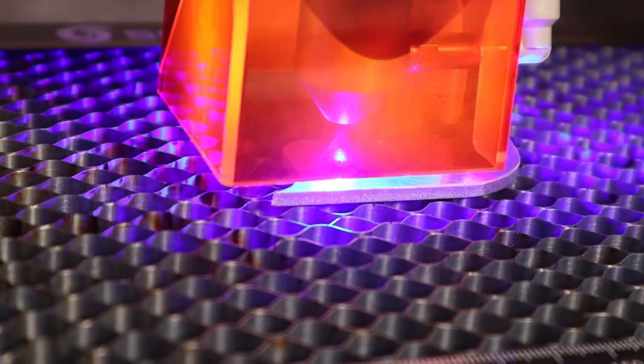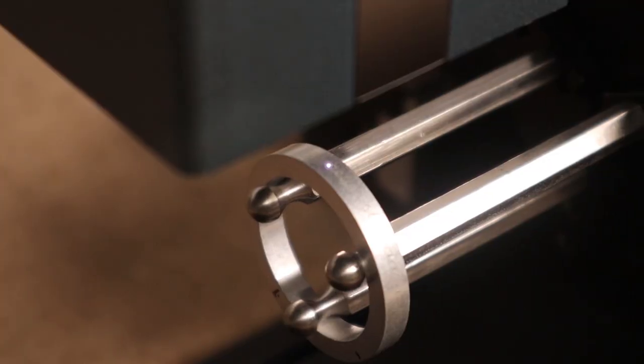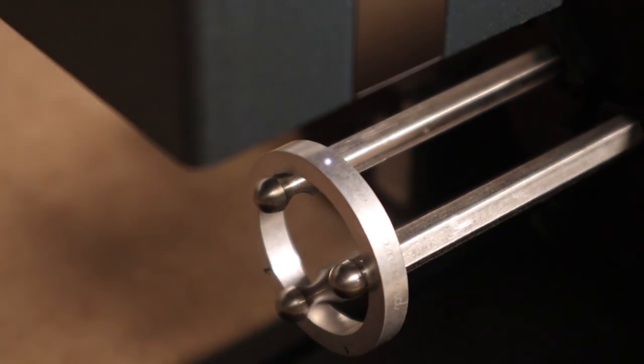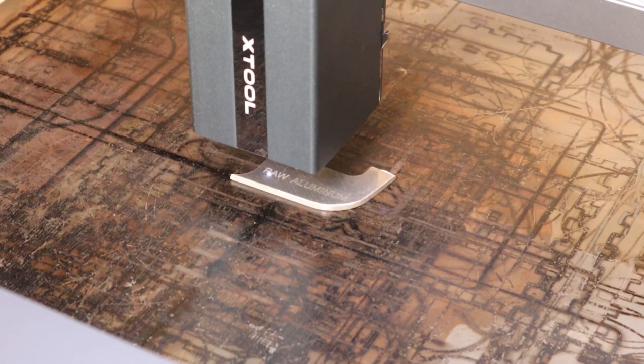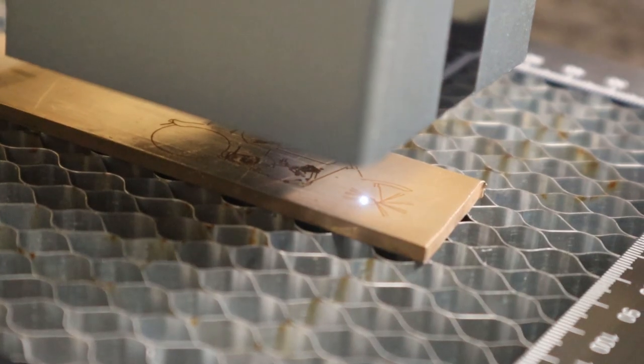Instead of emitting blue light like most diode laser engravers, it emits invisible infrared light. Infrared light has different absorption compared to visible light, so you will be able to engrave different materials with this laser module.